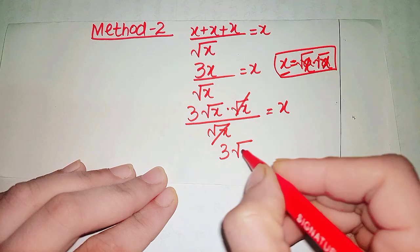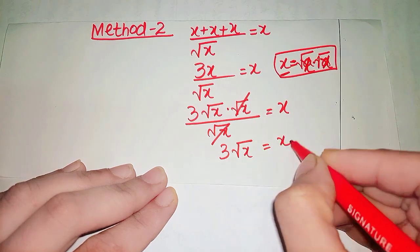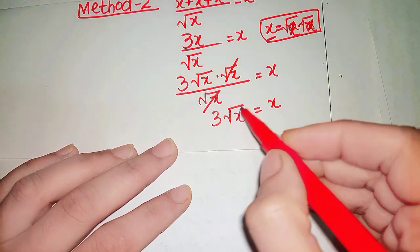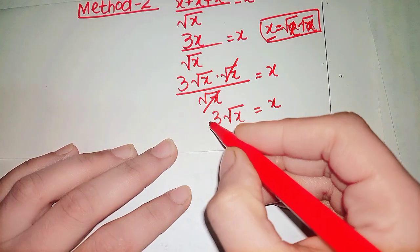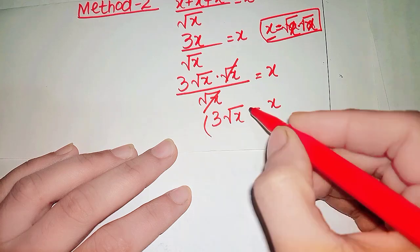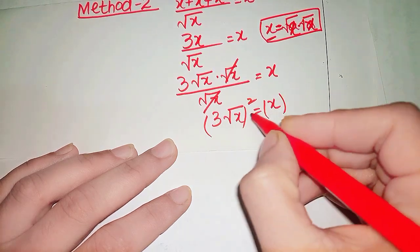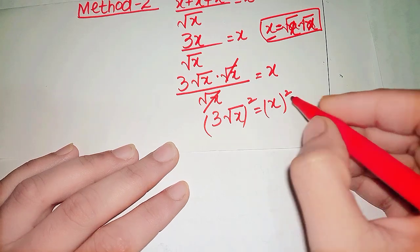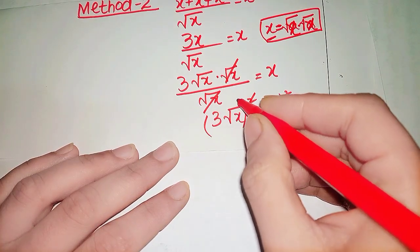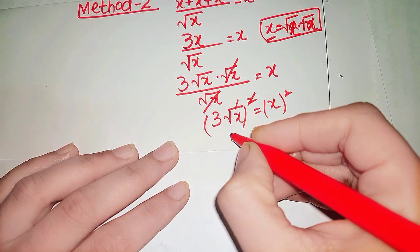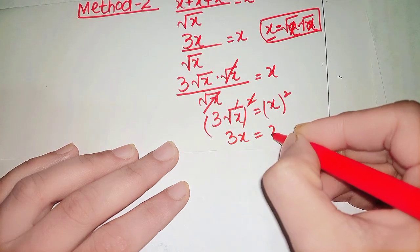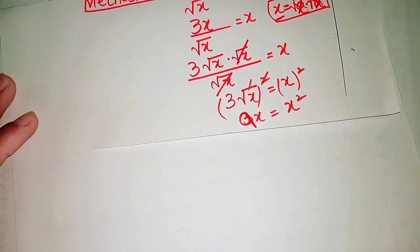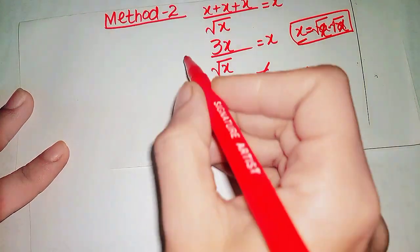We need to remove the square root, so we take the square on both sides: 3 times square root of x whole squared equals x whole squared. The square cancels with the square root, giving us 9x equals x squared.